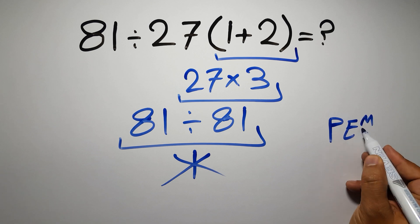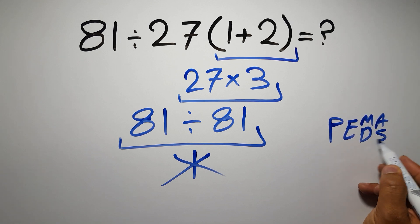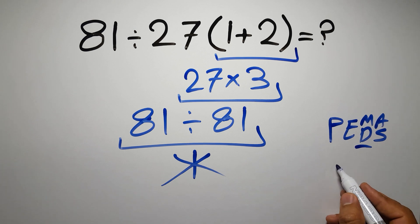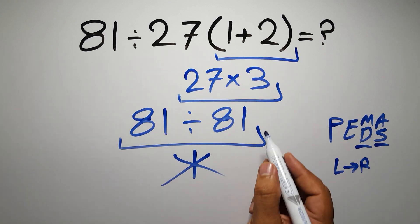exponents, then multiplication or division, and finally addition or subtraction. Remember that multiplication and division have equal priority and we have to work from left to right, and the same applies to addition and subtraction.